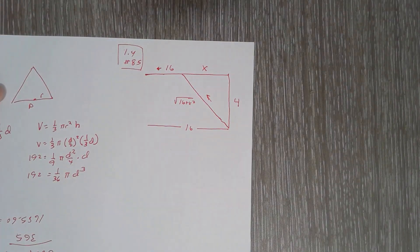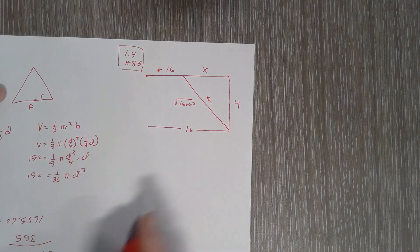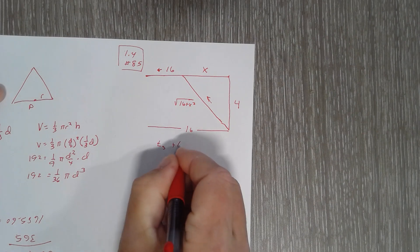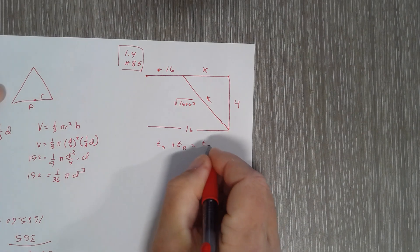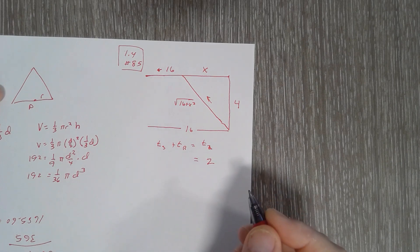When you read the problem, they give us the rates of swimming and running, and they give us a total time for swimming and running. So it's going to be a time equation: time swimming plus time running equals total time, which was two hours.